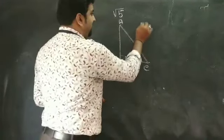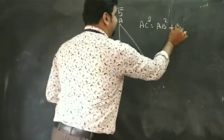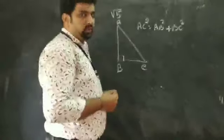Or I can say, AC square is equal to AB square plus BC square. This is the theorem of Pythagoras.